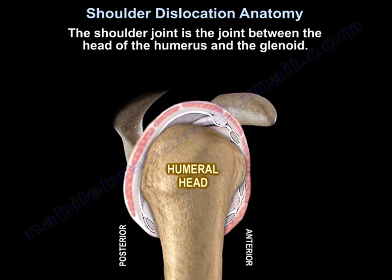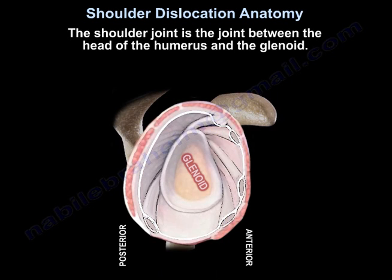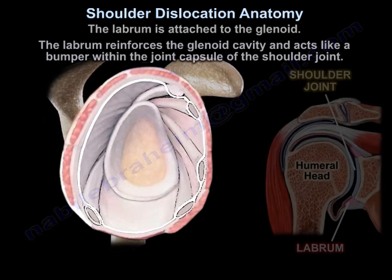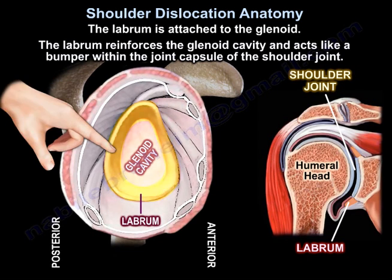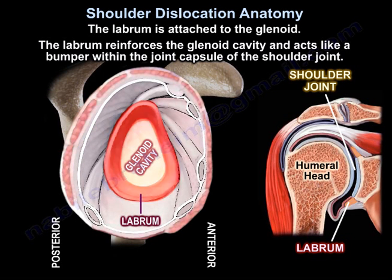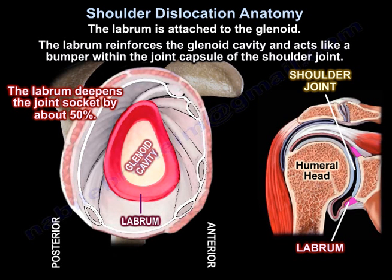The shoulder joint is the joint between the head of the humerus and the glenoid. The labrum is attached to the glenoid. The labrum reinforces the glenoid cavity and acts like a bumper within the joint capsule of the shoulder joint. It deepens the socket by about 50%.